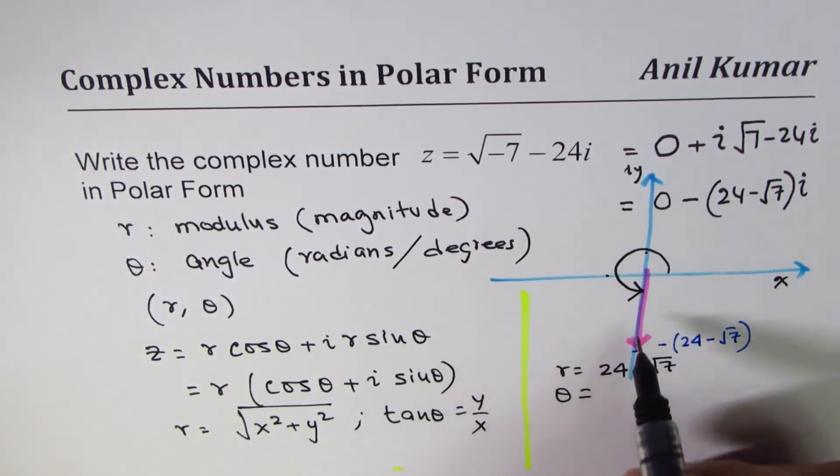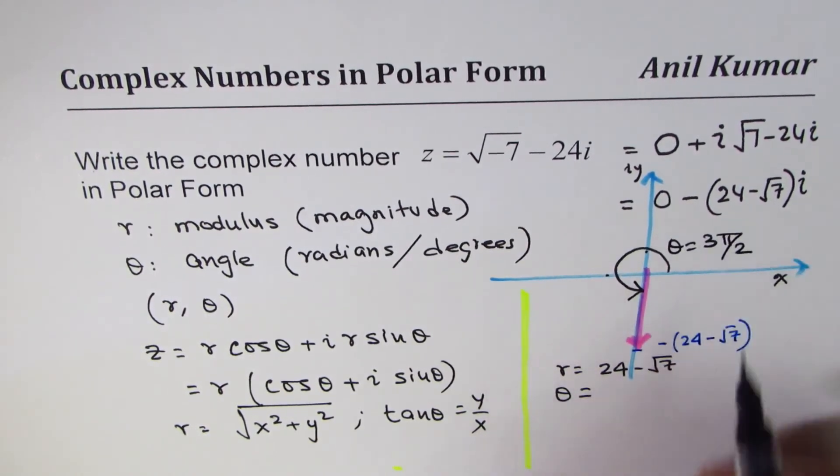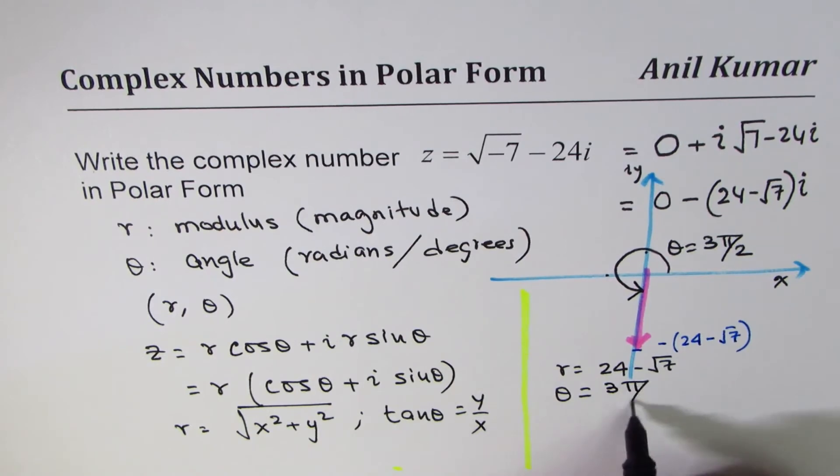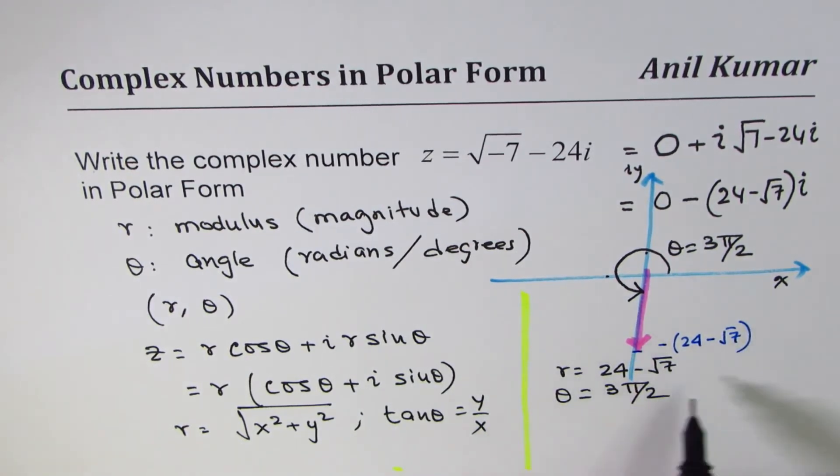And the angle theta is: this angle is π/2, 2π/2, 3π/2, so theta is 3π/2. Once you get r and theta, you could always write the answer.